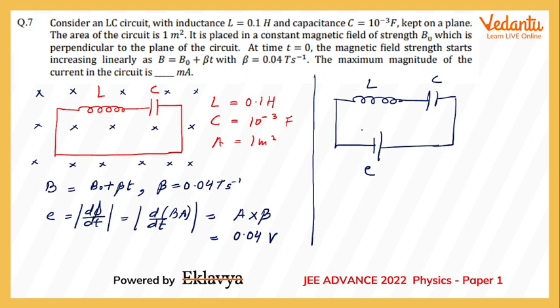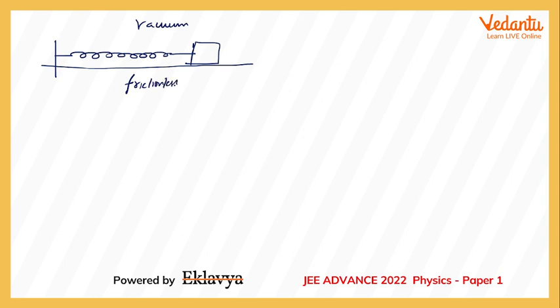Now we can compare this circuit with a spring-block arrangement. Compare the circuit with a spring-block arrangement kept in vacuum and on a frictionless surface, such that at t equal to 0, the block is not having any velocity, the spring is in its natural length.